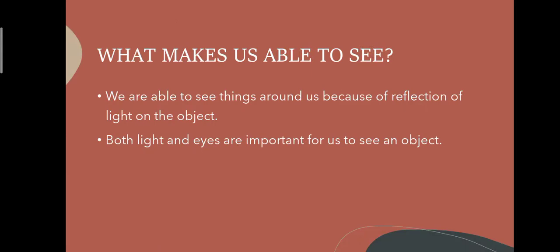First, a question arises: what is the phenomenon that allows us to see things? The answer is that we can see the things around us because of the reflection of light on objects.